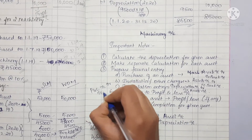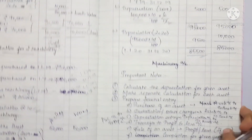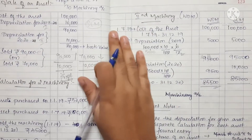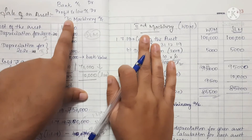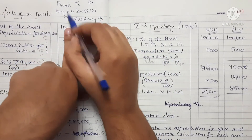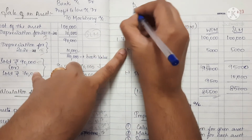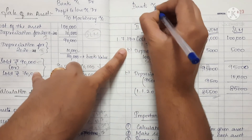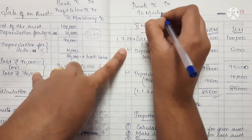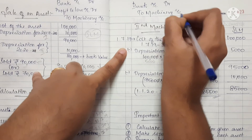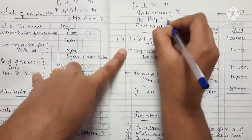Depreciation short formula: depreciation account debit to asset account. We also transfer depreciation to profit and loss account: profit and loss account debit to depreciation. For sale of asset — if there is a loss, we need to record that. This is the entry for sale of asset on profit.